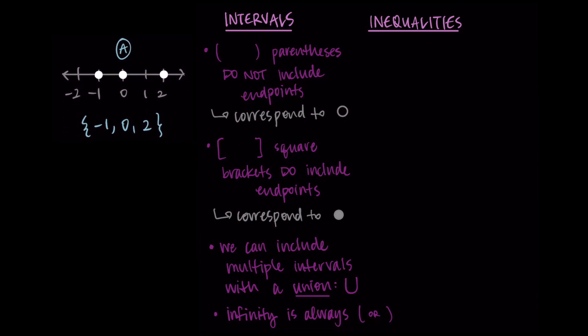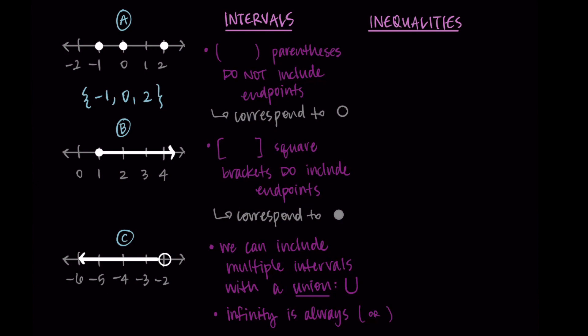I promise as we do examples, this will start to make more sense. So let's look at examples b and c and write these with intervals. I like to start with the points I can identify — I see a filled-in circle at one, which tells me we're going to use a square bracket. So I write a square bracket and a one, meaning we're including that point. Then we're going everything bigger than one all the way to infinity, so we do a comma, then infinity, then a parenthesis at the end. This tells us we're including all values between one and infinity, including one.